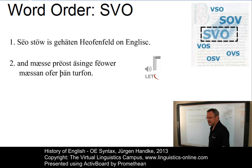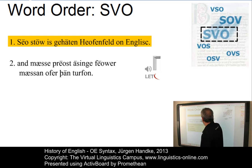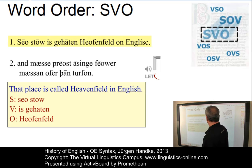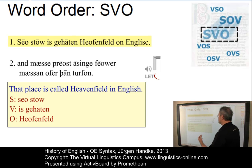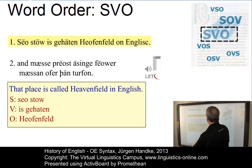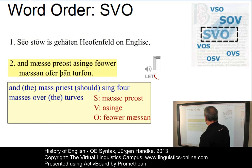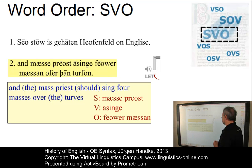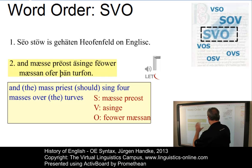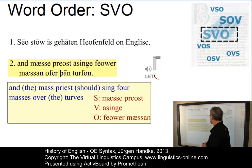The first is the SVO word order. In the first example, 'Seostow' is the subject, 'Jehaten' is the verb, and 'Hevenfeld' is the object — clearly an SVO structure. In the second example, 'Messe Preost' is the subject, 'Asinge' is the verb, and 'Feur Messan' is the object — again clearly SVO.